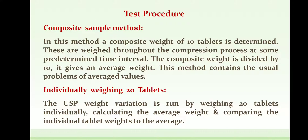The test procedure for evaluating tablet weight variation has two general methods. One is the composite sample method and another is the individual weighing of 20 tablets, or individual weight method. In the composite sample method, a composite weight of 10 tablets is determined, weighed throughout the compression process at some predetermined time interval.